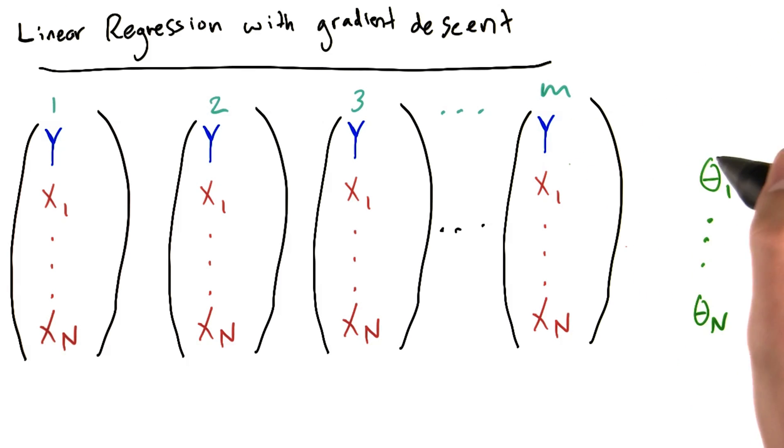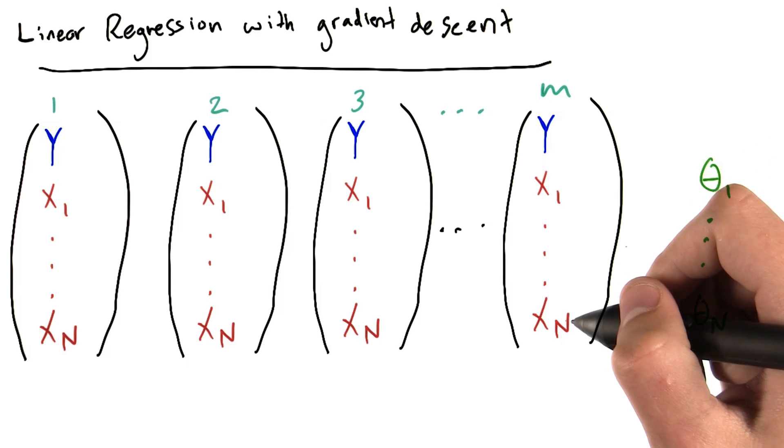So if theta 1 is very small, x1 must not be very important in general when predicting y. Whereas if theta n is very large, then xn is generally a big contributor to the value of y.